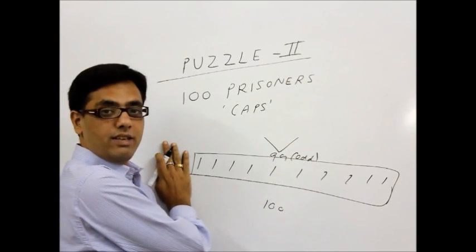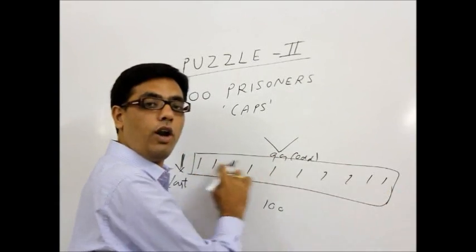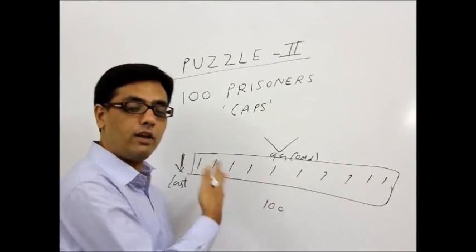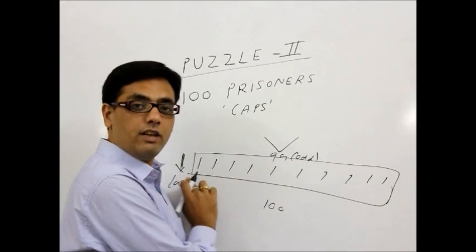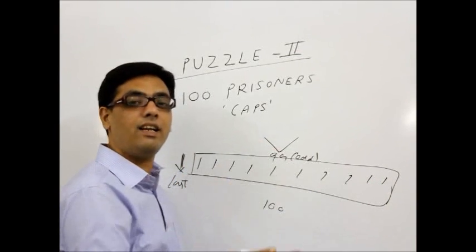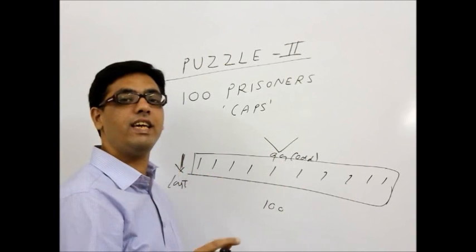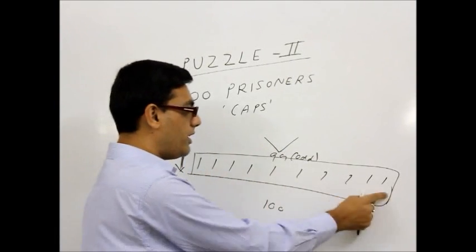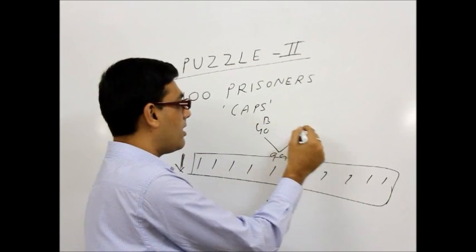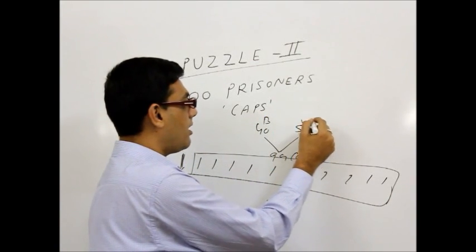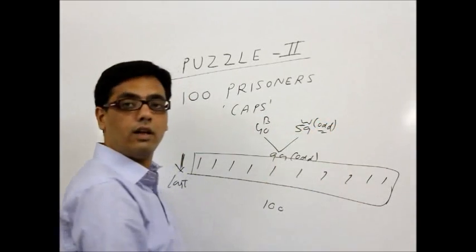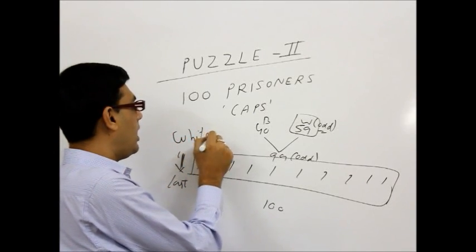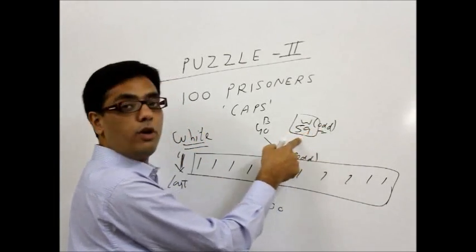And the last person forgets himself. He can't see his color. But he can see all remaining 99 caps for sure. So what he will do is, rather what strategy they have planned is, the last person will speak that color which he is seeing odd number of times. For example, out of these 99, let's say 40 are black and 59 are white. So this guy, the last guy will shout white loudly as he is seeing white odd number of times.